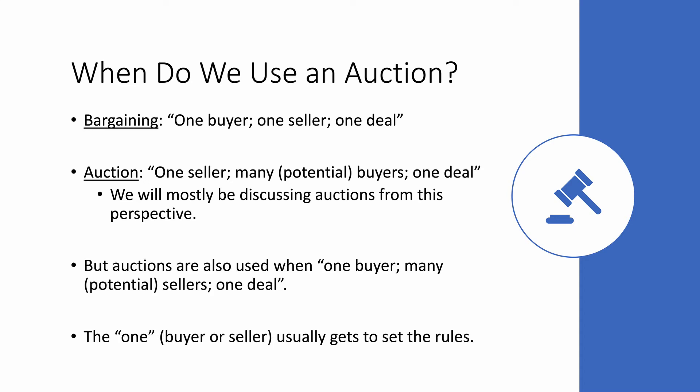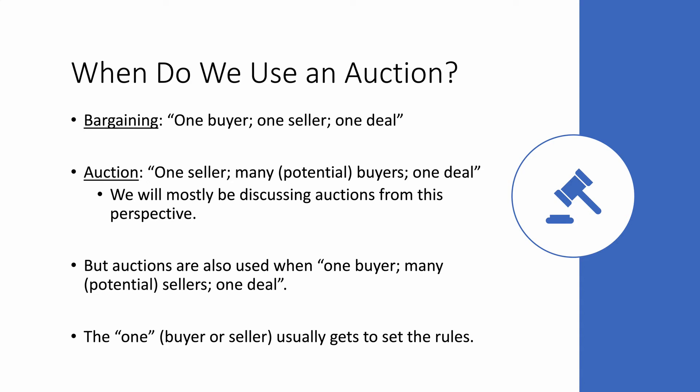However, auctions can also be used when there is one buyer and multiple sellers — reversing the roles of buyers and sellers. Commonly in that auction format, we see government or large corporation procurement programs. When the government wants to buy something in large quantity, many suppliers may participate in an auction competing to sell the product to the buyer. In that case, they are not bidding up, they are bidding down, because they are competing to sell. The one — either the buyer or the seller — is usually the one who gets to set the rules in these auctions.